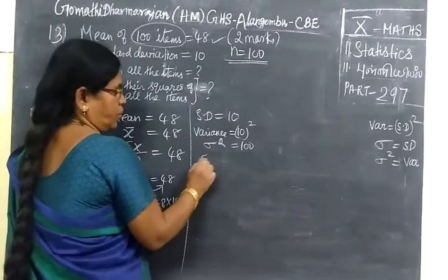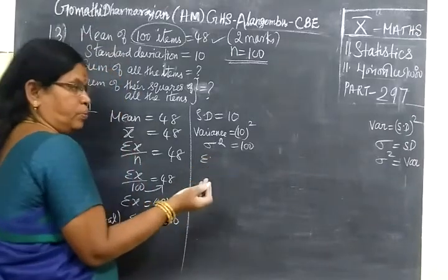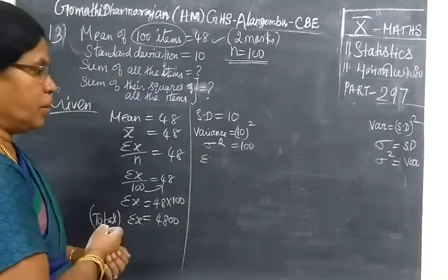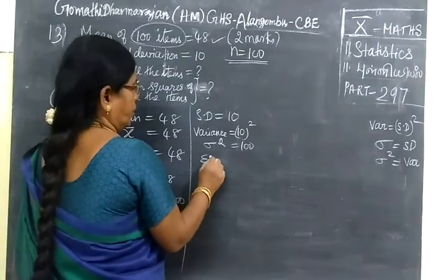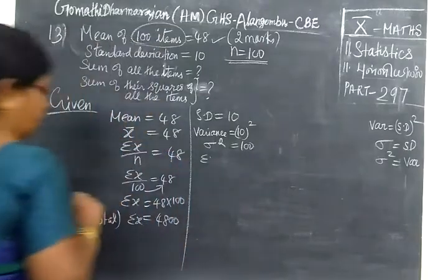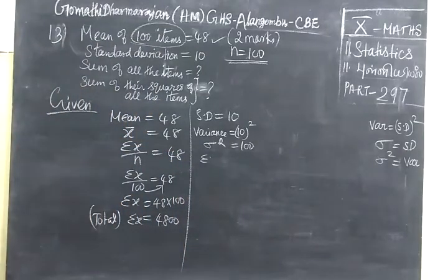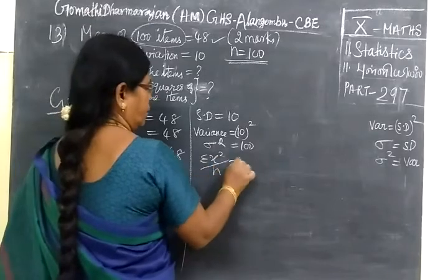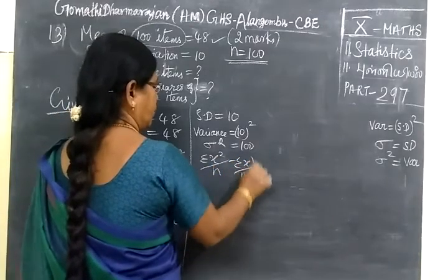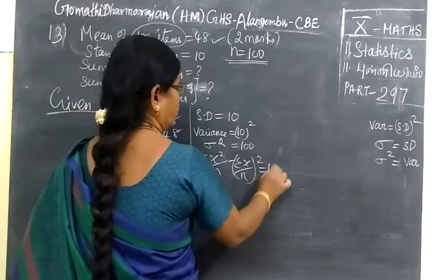Sigma square means sigma X square by sigma F. So in this way we are finding sigma F when we have this equation: sigma X square by N minus sigma X by N the whole square.